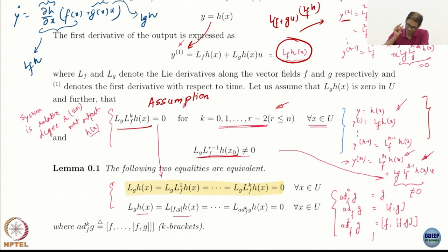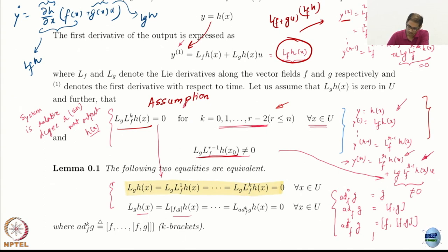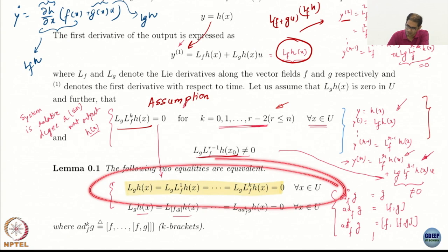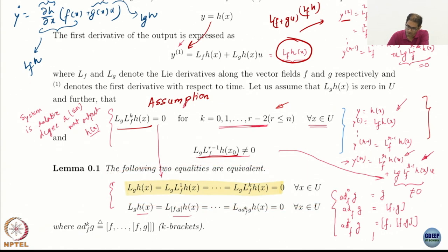It is a bit technical, but look at the expressions. Here you had Lg, Lg Lf, all the way to Lg Lf^k. And this being 0 is equivalent to saying that Lg h, L_{ad_f g} h, L_{ad_f^k g} h are all 0.